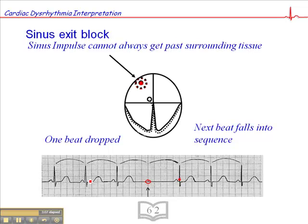In sinus pause or sinus arrest, the SA node fails to fire, followed by a long pause where at least two beats are dropped. In sinus exit block, the SA node continues to fire, but at one point the impulse from the SA node just can't get around the surrounding tissue. And so we see a single dropped beat and a short pause.